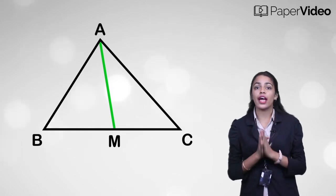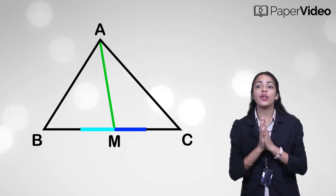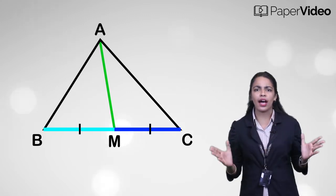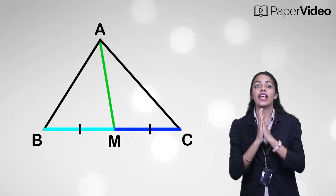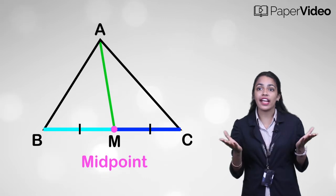As we know that median divides the side on which it is falling in two equal parts, so this means that M is a midpoint of side BC.